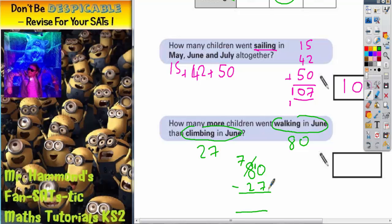10 take away 7 is 3. 7 take away 2 is 5. So the final answer is 53.